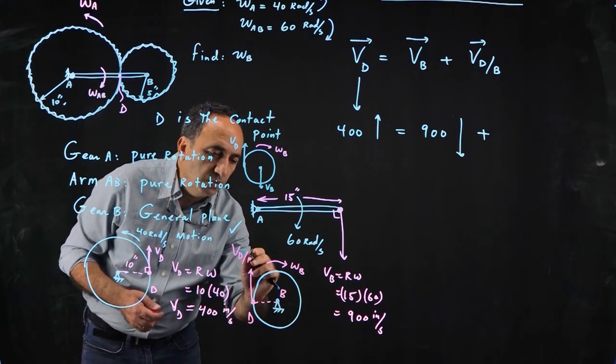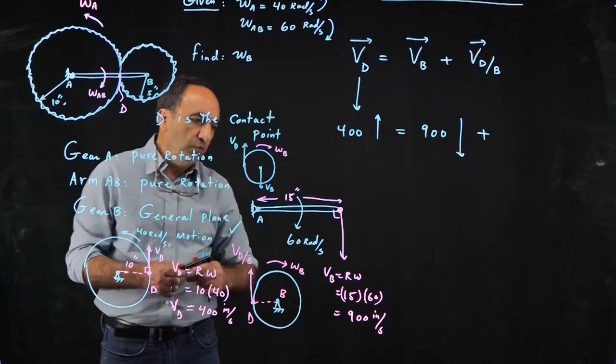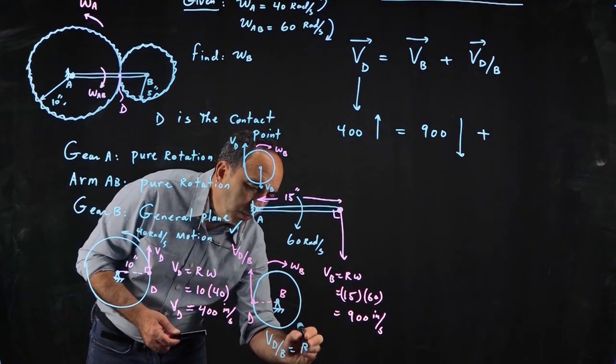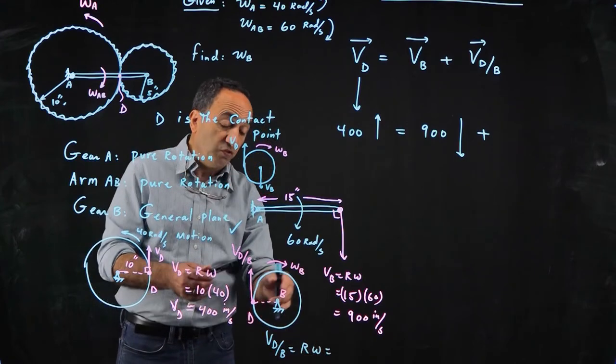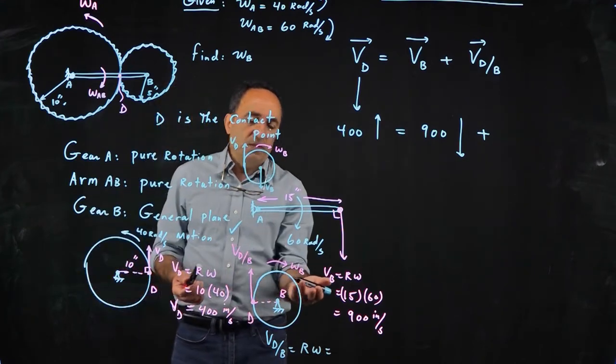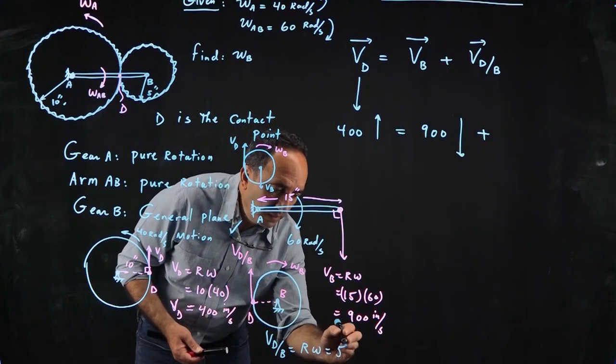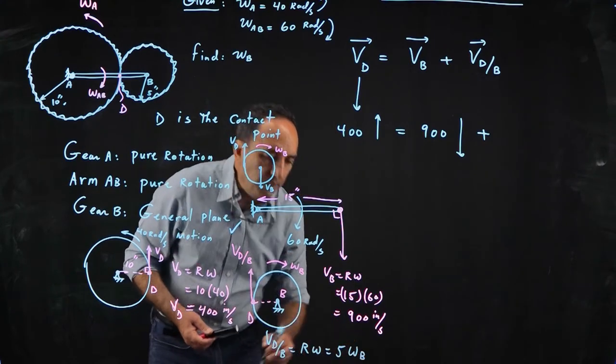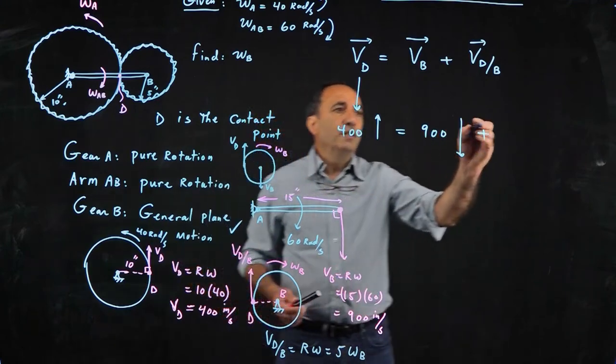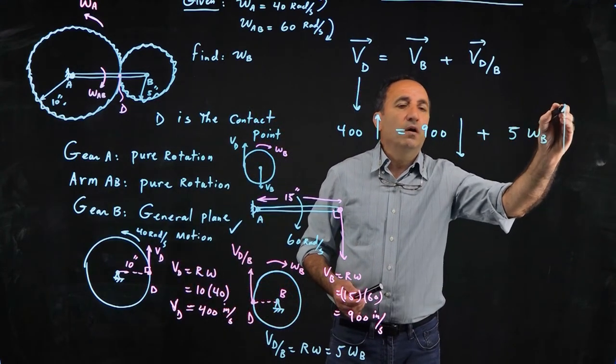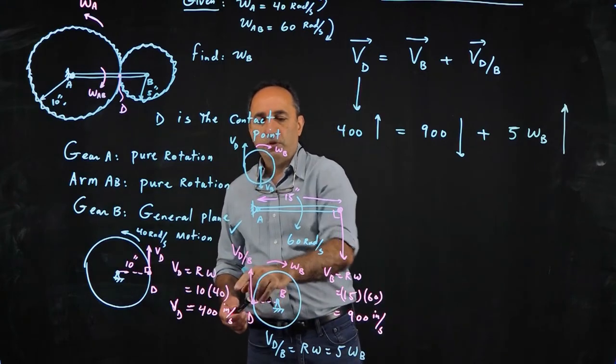That's the V_D/B, which is pure rotation. R omega. We are assuming that this is pure rotation by making B fixed. R is 5 inches, and omega is omega B. So that will go right here, 5 omega B, pointing up, according to this.